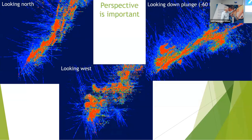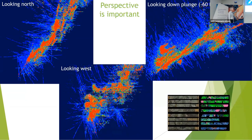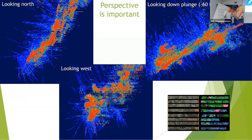Going back to the Red Lake example to reinforce perspective: now imagine those drill holes are painted with mineral maps from hyperspectral core scans. We could see different clay mineral assemblages or silicate mineral assemblages in blue, pink, or green colors. Imagine what that would look like when you're looking down plunge — you'd see all these alteration halos around the ore zone associated with this hydrothermal system. This is orogenic gold, so think about what you would see with different colors — not just the gold mineralization, but all the other alteration assemblages.